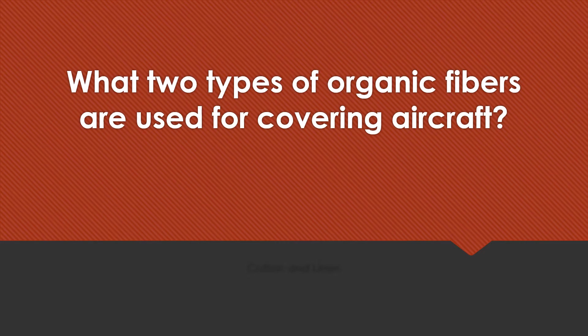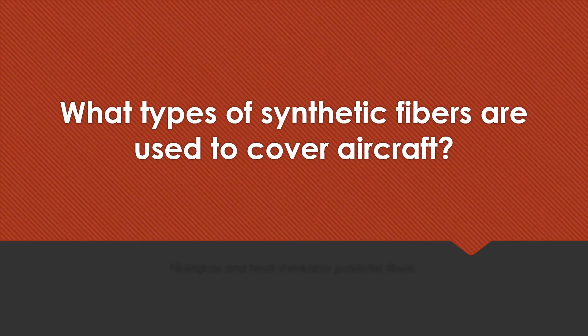What two types of organic fibers are used for covering aircraft? Cotton and linen. What types of synthetic fibers are used to cover aircraft? Fiberglass and heat-shrinkable polyester fibers.